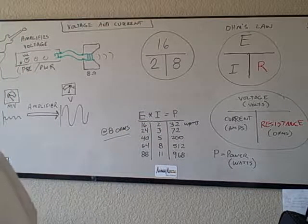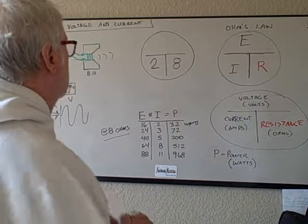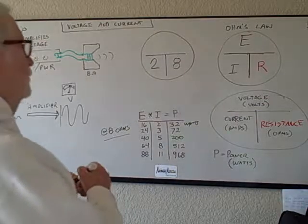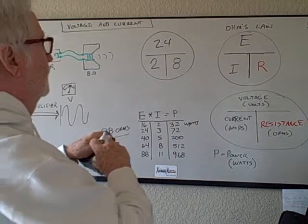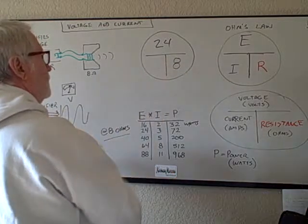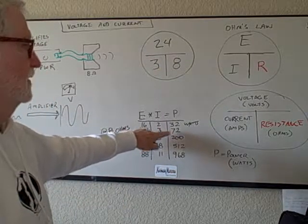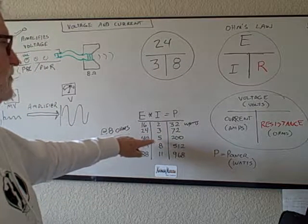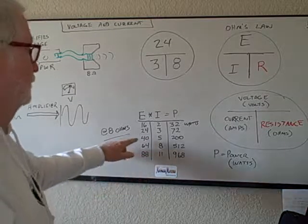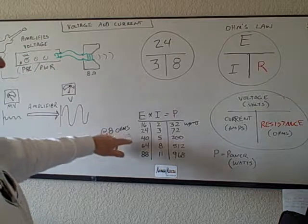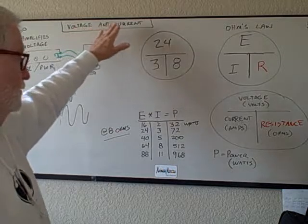So if we turn the amplifier up, turn the volume up a bit, and now we've got 24 volts. Turn the volume up, turn it to 11. So now we've got 24 volts here. Well, 8 divided into 24 is 3 amps, 24 volts, 3 amps, we get 72 watts. And from the table you can tell that as we raise the voltage by turning the volume up, the current goes up. And I started off my speech by saying we're going to talk about voltage and current.